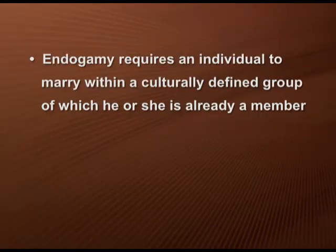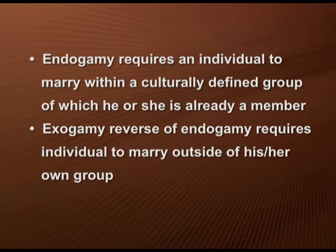Regarding the rules and prescriptions governing marriages, there are two main categories. Endogamy requires an individual to marry within the culturally defined group of which he or she is already a member. Exogamy is the reverse, requiring an individual to marry outside his or her group. Endogamy and exogamy are in reference to certain kinship units such as clan, caste, racial, ethnic, or social groupings.